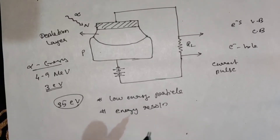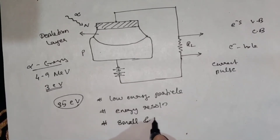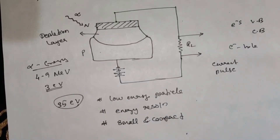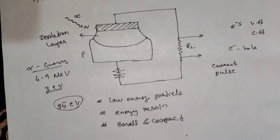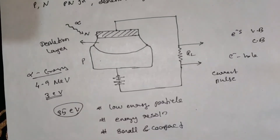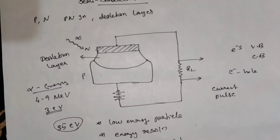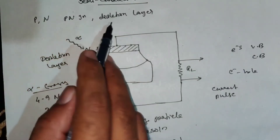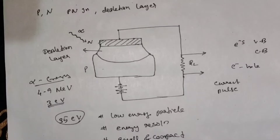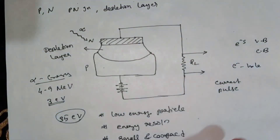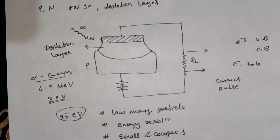That is why the most benefit is that it is very small and compact. The semiconductor detector is small and compact. If you want to explain this paragraph, the key concepts are: PN junction, P-type, N-type, depletion layer, conduction band, and valence band.